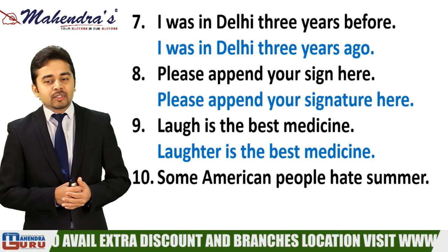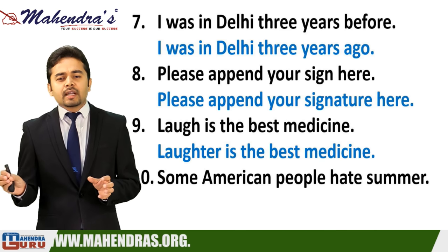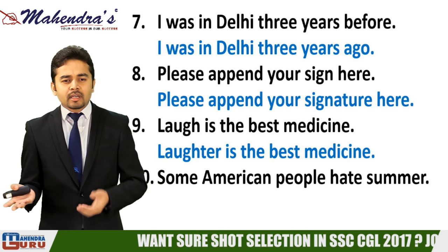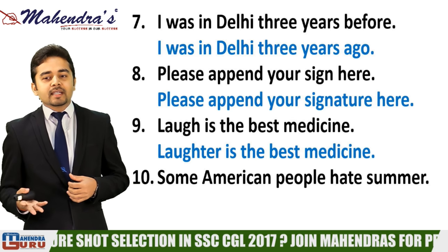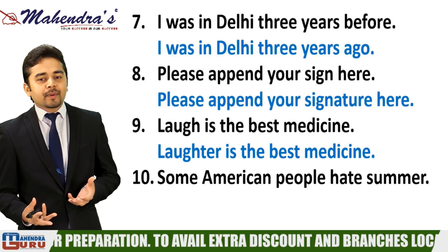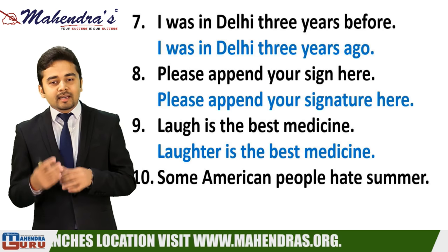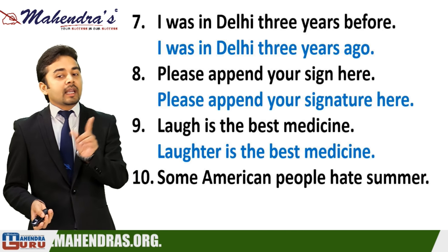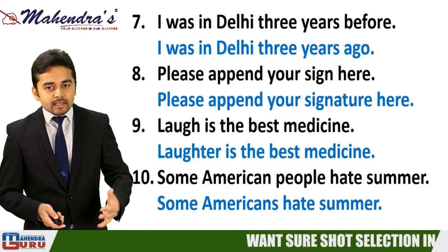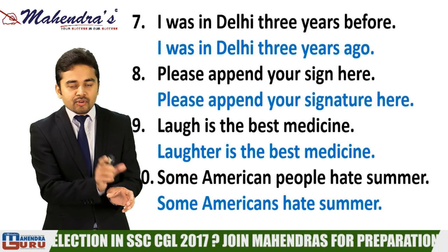Tenth sentence: 'Some American people hate summer.' The problem is 'American people.' Since 'American' already refers to people who live in America, adding 'people' is redundant. The correct form is to use the plural noun directly: 'Some Americans hate summer' or 'Some Indians,' 'Some Australians' — use the country adjective in plural form, not with the word 'people.'